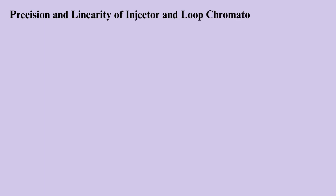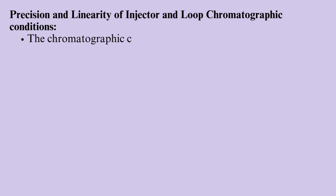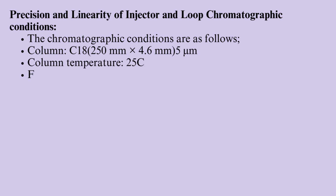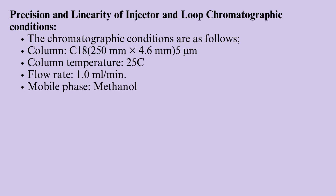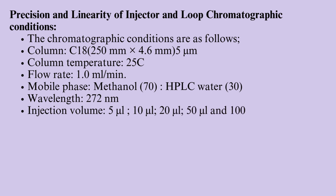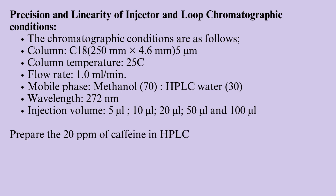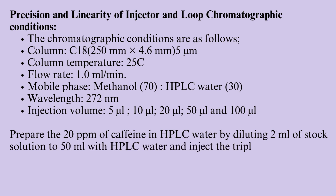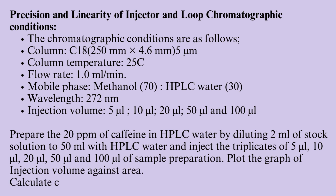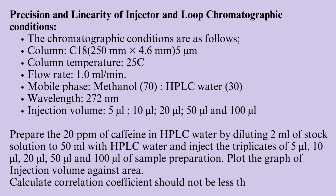Calibration of injector loop — precision and linearity of injector and loop. Chromatographic conditions: column C18, 250 mm × 4.6 mm, 5 µm; column temperature 25°C; flow rate 1 ml/min; mobile phase methanol/HPLC water; wavelength 272 nm; injection volumes 5 µL, 10 µL, 20 µL, 50 µL, and 100 µL. Prepare 20 ppm of caffeine in HPLC water by diluting 2 ml of stock solution to 50 ml with HPLC water. Inject triplicates of 5, 10, 20, 50, and 100 µL of sample preparation. Plot the graph of injection volume against area. Calculate the correlation coefficient — it should not be less than 0.998.